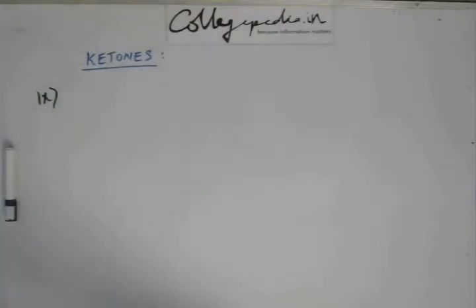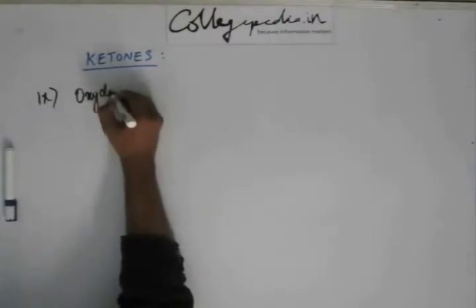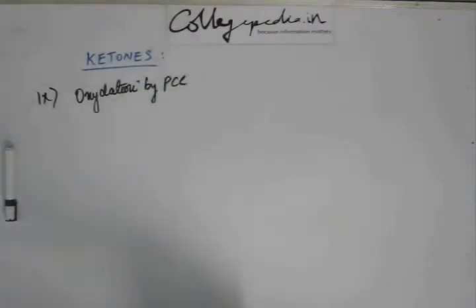Next reaction can give you both aldehydes and ketone. For example, oxidation by PCC. I will tell you what PCC is but first I will tell you what PCC does.